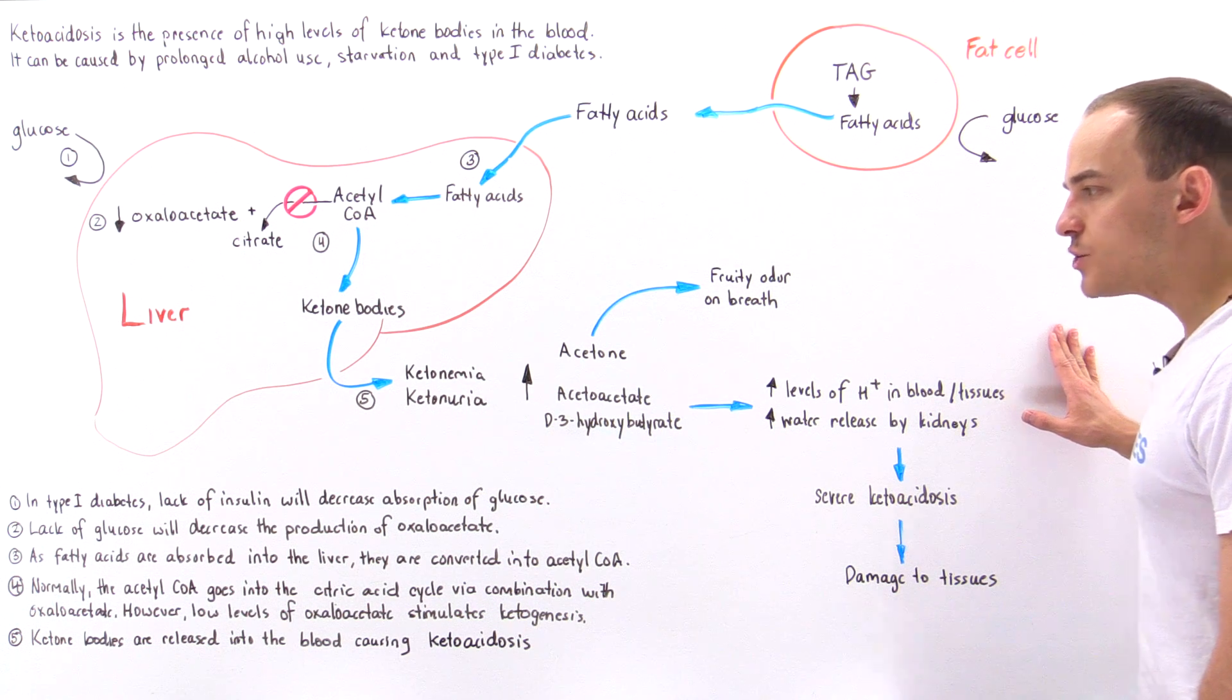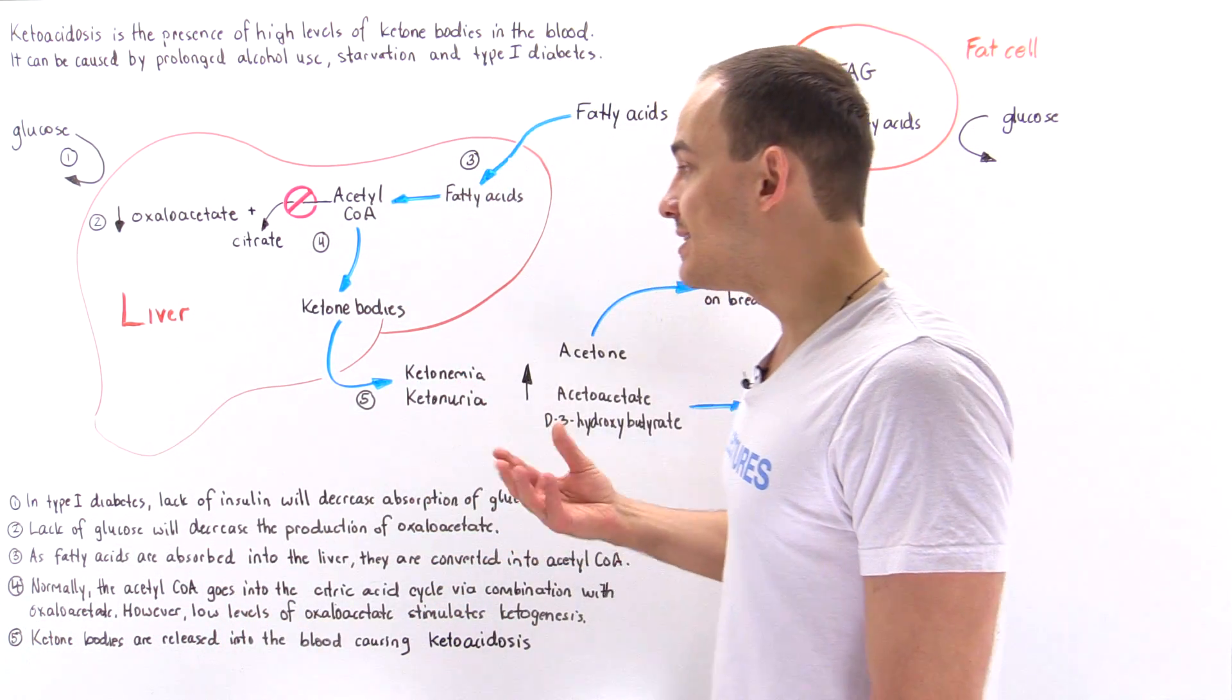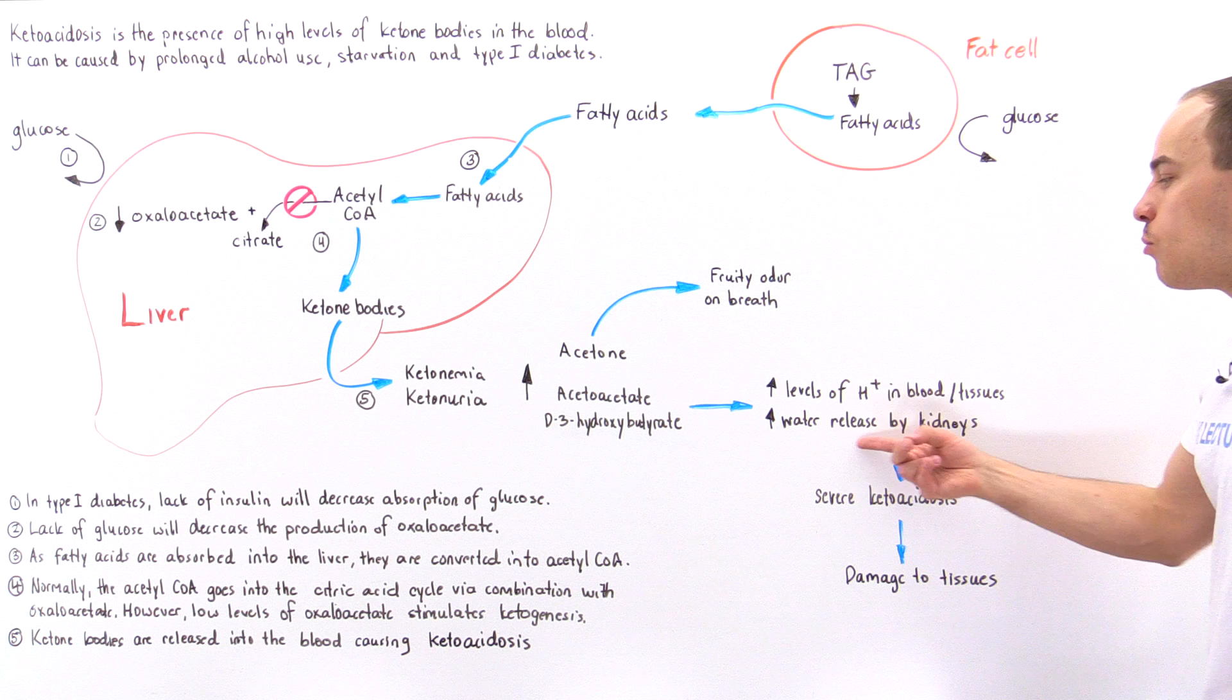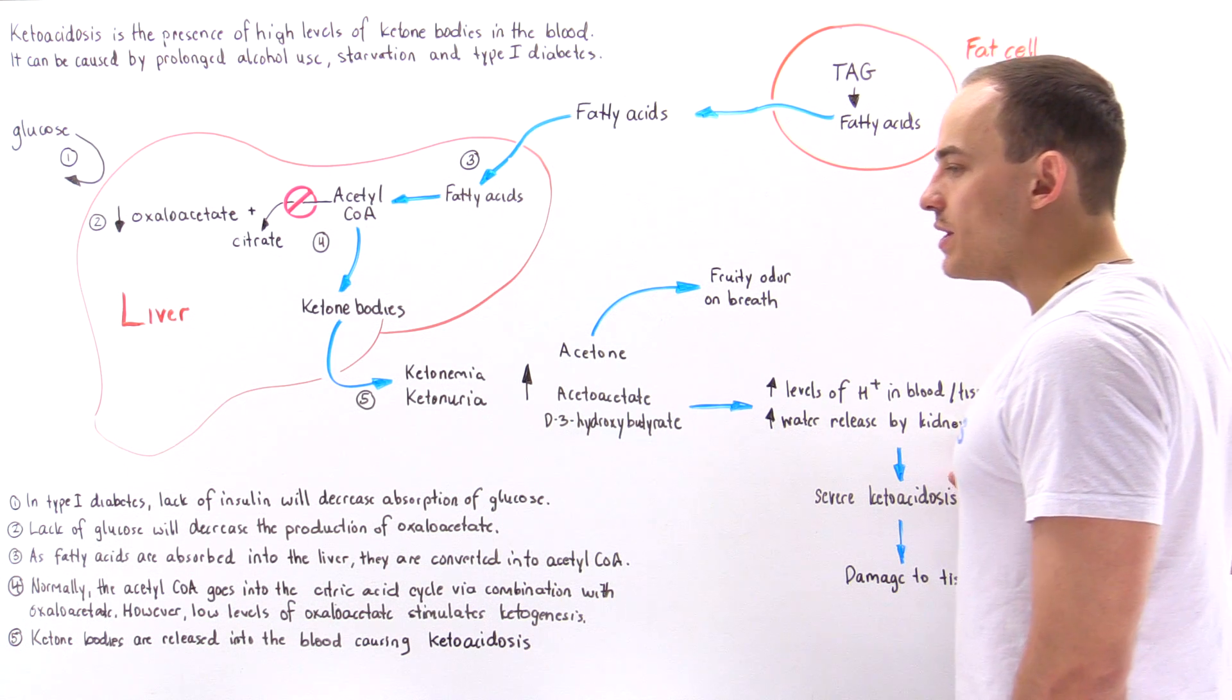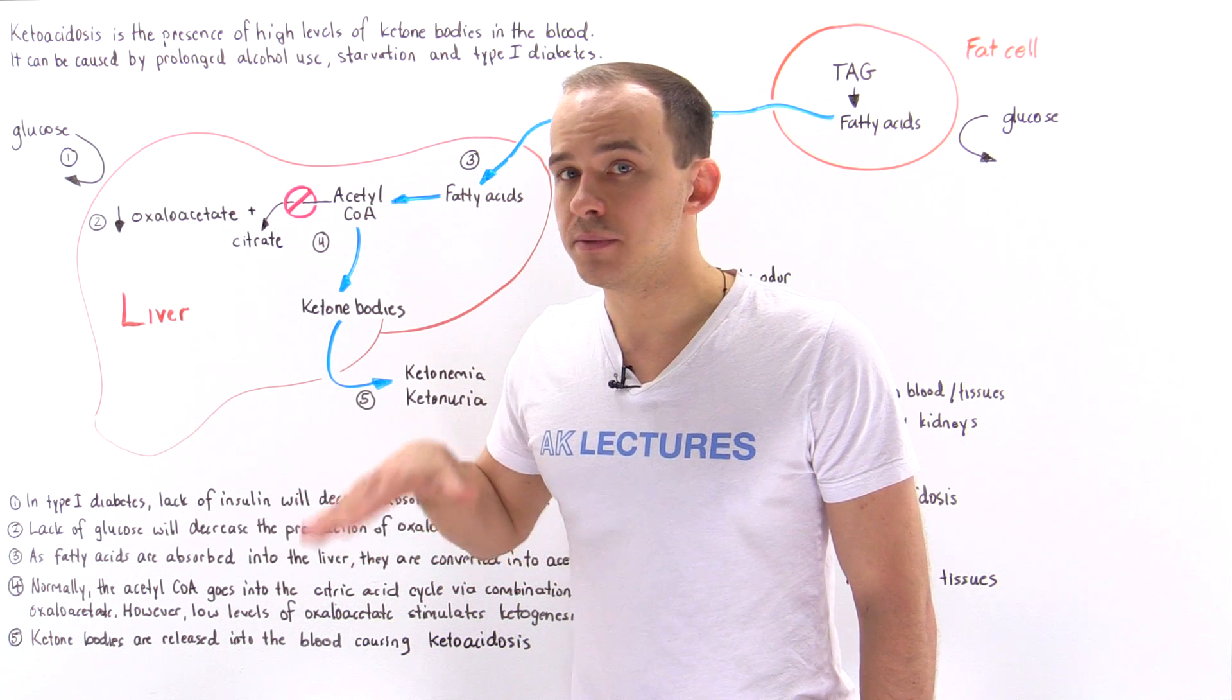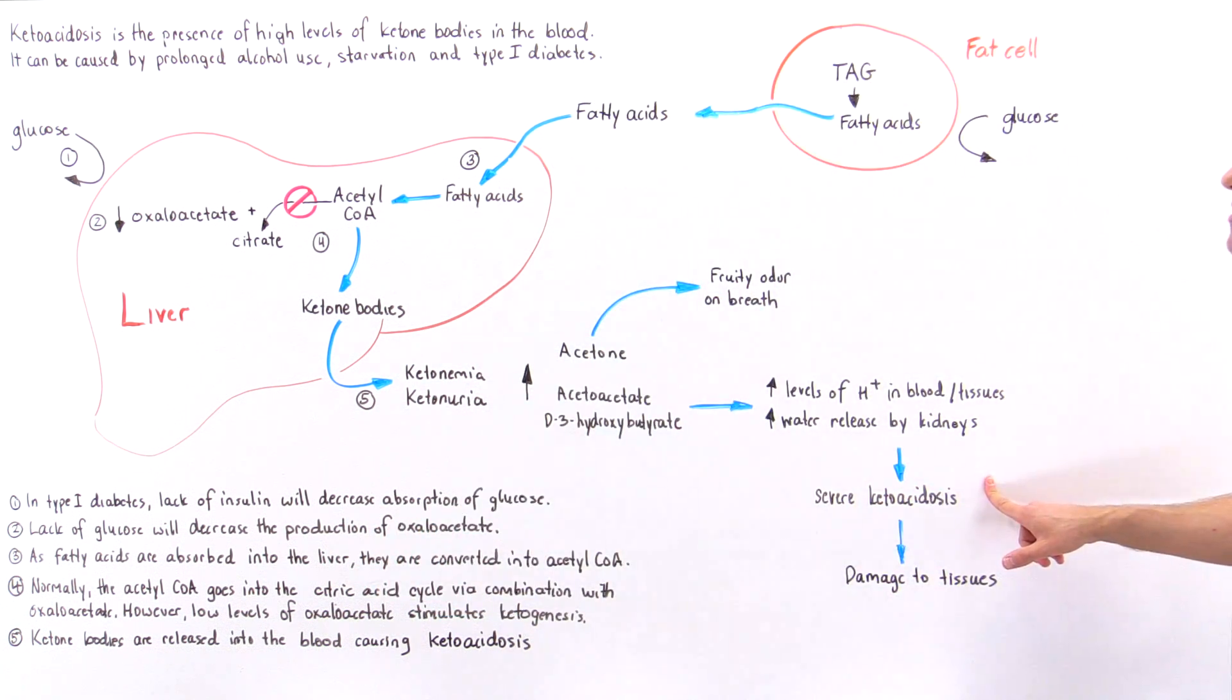In addition, as a result of ketonuria, the release of these ketone bodies in the kidneys, osmosis will take place inside the kidneys. And so we're going to release much more water than usual. On top of increasing the levels of H+ ions in the blood and tissues, we're going to increase the amount of water that we release by the kidneys. So we essentially decrease the volume because we decrease the water content in the blood, we increase the concentration of H+ ions in the blood. And what that does is it causes severe ketoacidosis.